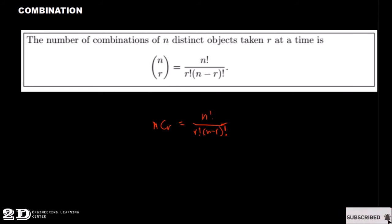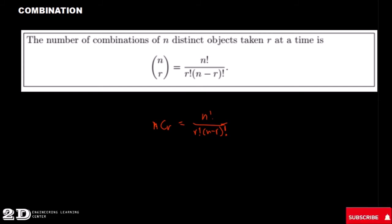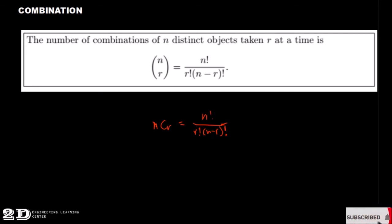In permutation, we are concerned with the ordered arrangement of a finite number of elements, but in combination we do not consider the order. There is a derivation of this formula but that would make the video longer — I will try to create another video for the derivation.